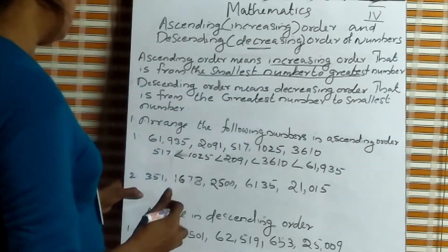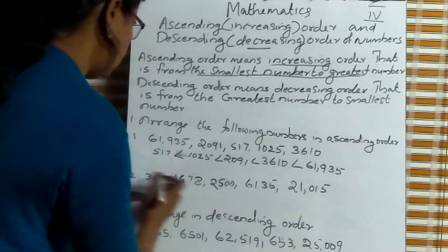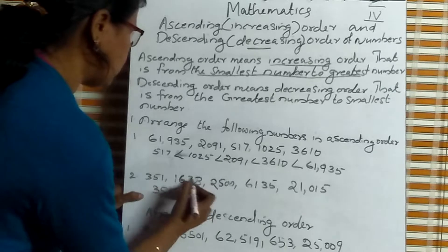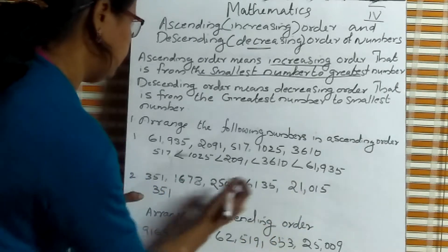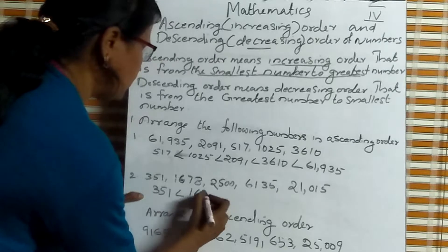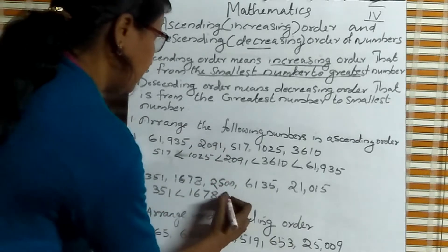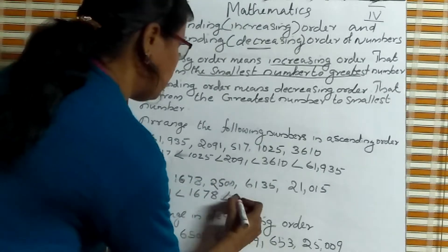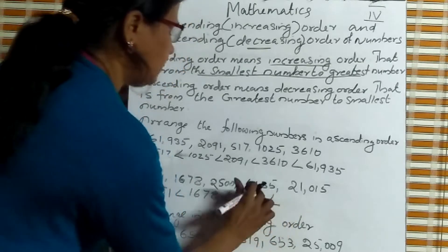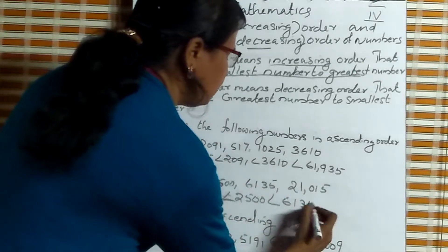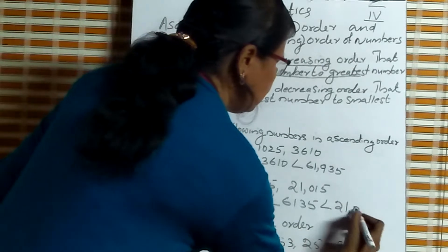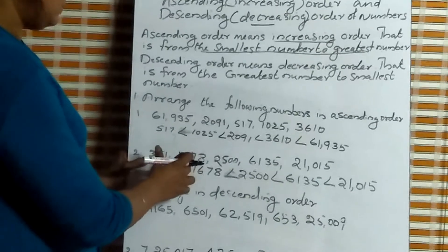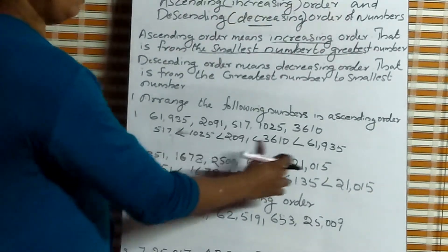Increasing order means smallest number to greatest. Which is the smallest number in this set? 351 is the smallest. Which is the next smallest number? 351 less than 1,678. Next smallest number is 2,500, less than. Next is 6,135, less than 21,015. So the order is: 351, 1,678, 2,500, 6,135, 21,015.